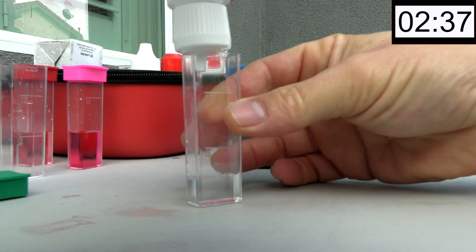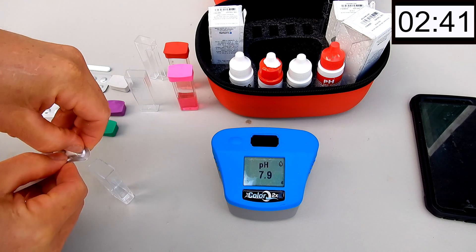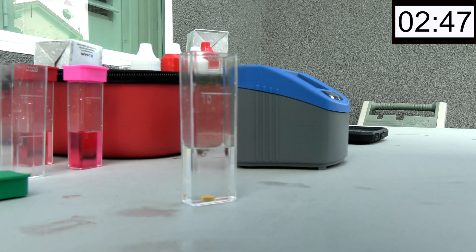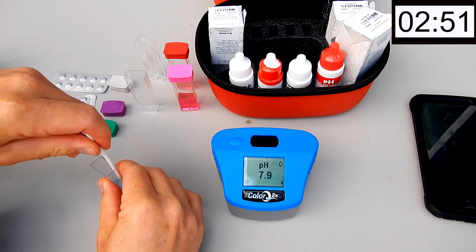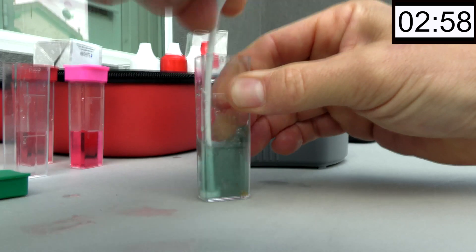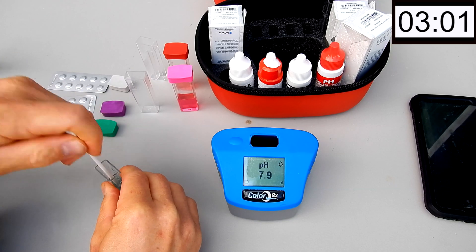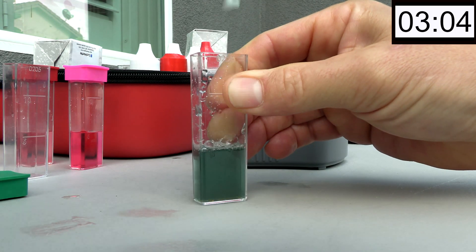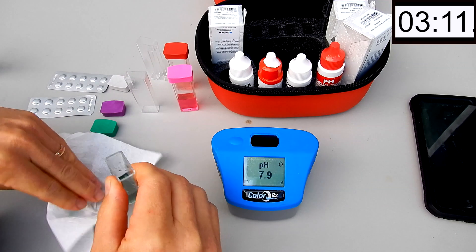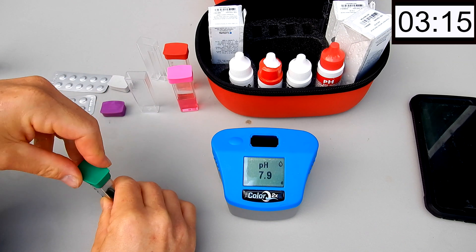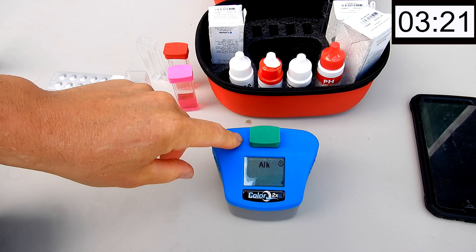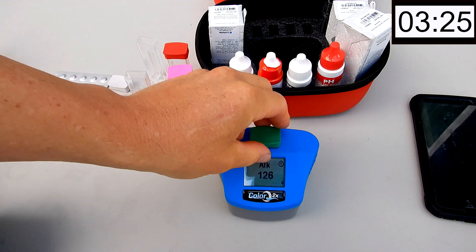The Alkalinity. And the tablets take a little bit of getting used to. You have to break them up thoroughly to make sure you get a good reading. I think LaMotte went with the tablets because they're more accurate in the long run and also the expiration date on the tablets is a lot longer. The tablet for the Alkalinity expires on 4/2023. Coming in at 126.